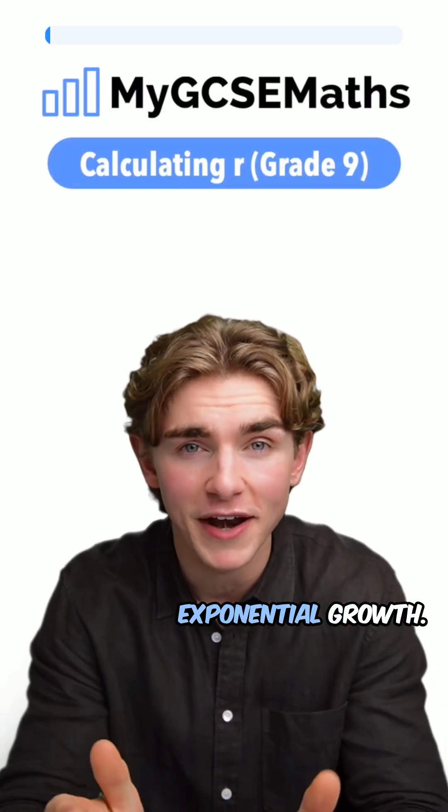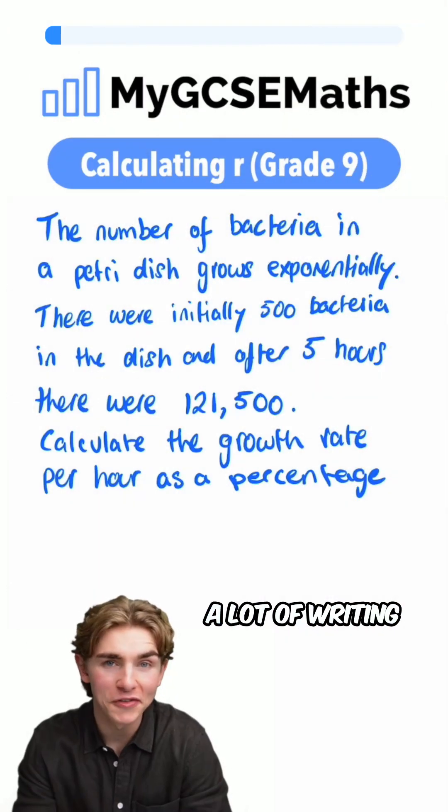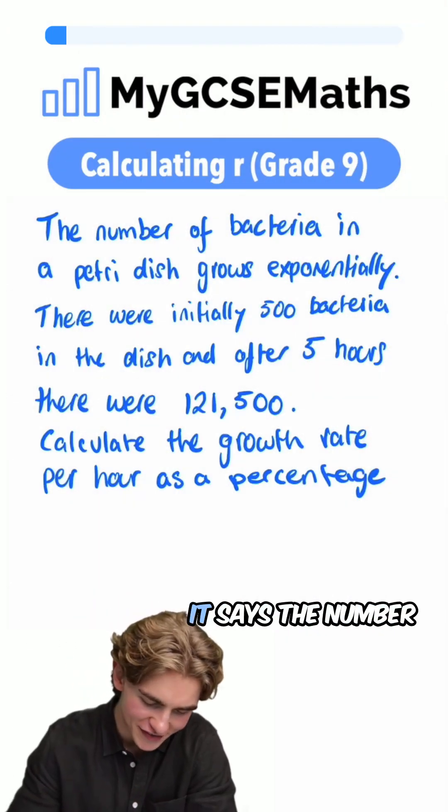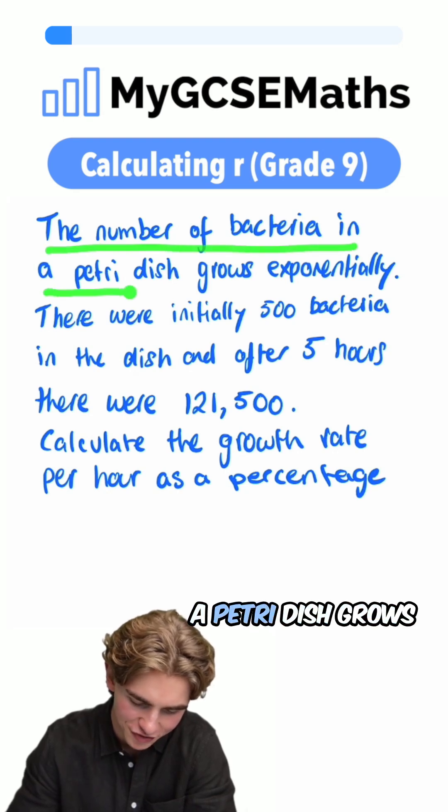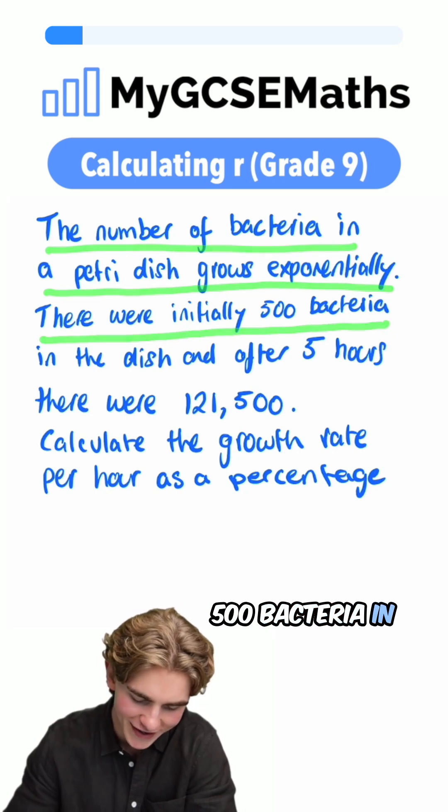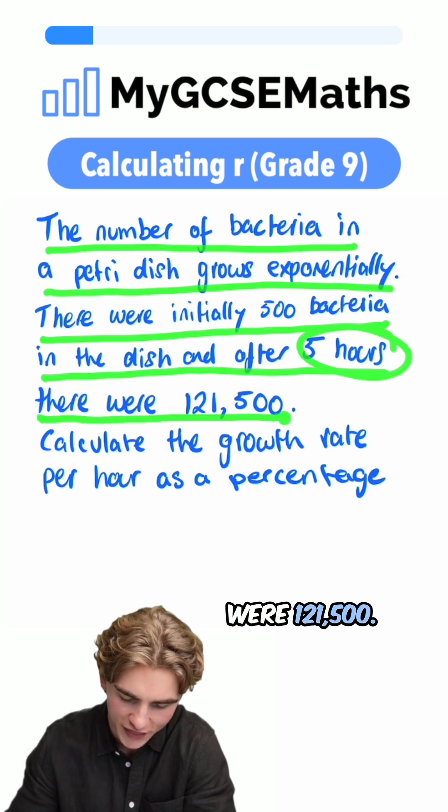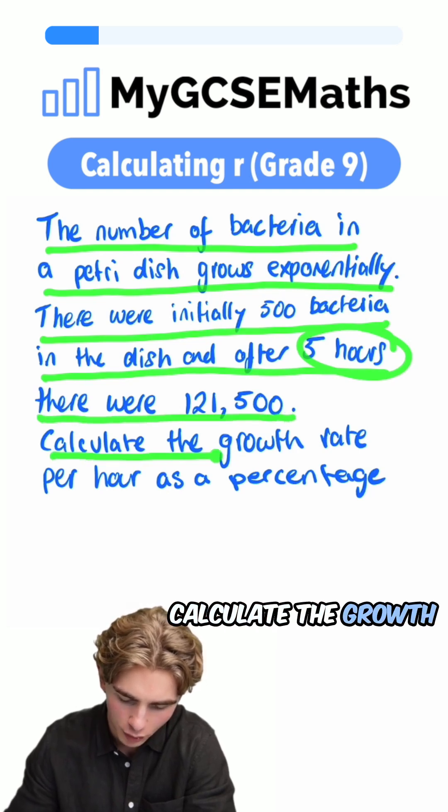GCSE maths grade 9, exponential growth, finding the growth rate in just two minutes. Let's go! A lot of writing on this one. Let's have a look. The number of bacteria in a petri dish grows exponentially. There were initially 500 bacteria in the dish, and after five hours there were 121,500. Calculate the growth rate per hour as a percentage.